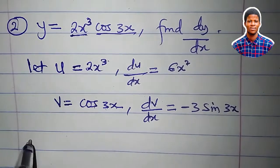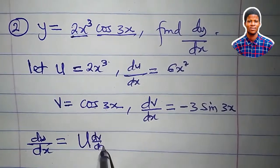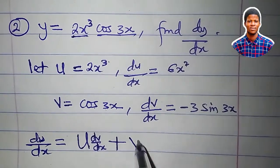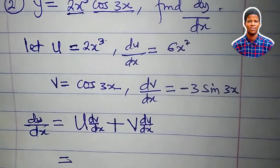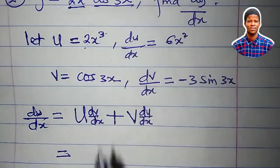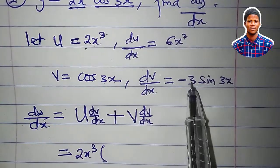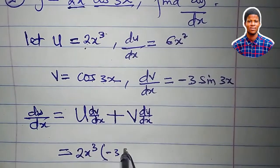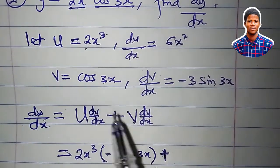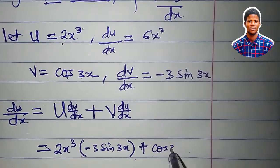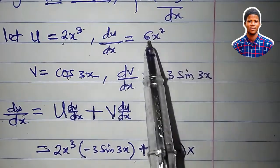Now, what is our dy/dx? dy/dx is equal to u dv/dx plus v times du/dx. What is our u? u is 2x³ times dv/dx which is minus 3 sine 3x plus v which is cos 3x times du/dx which is 6x².